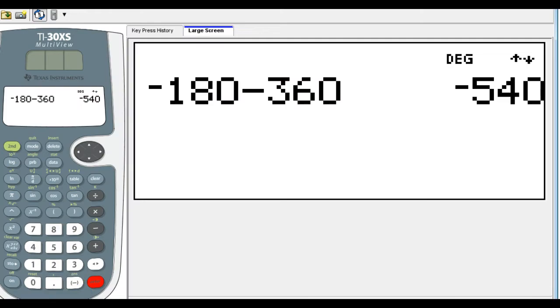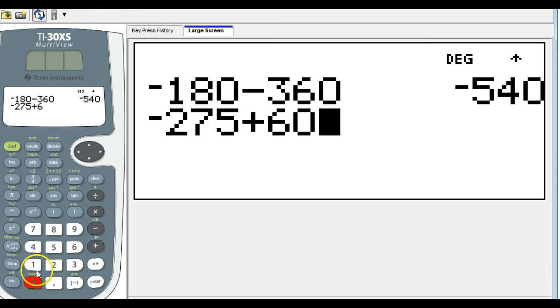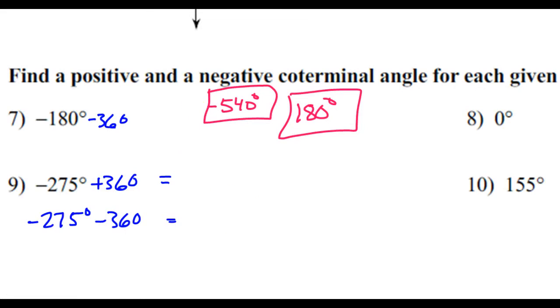Negative 275 plus 360, that's 85. So 85 degrees is a coterminal angle.